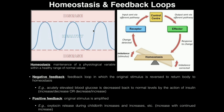Blood pressure cycles up and down continuously. Only when you generally get into those higher areas, or in some cases very low areas, do you have the possibility of disease. In order to maintain homeostasis, you have to have what are called negative feedback systems or negative feedback loops.